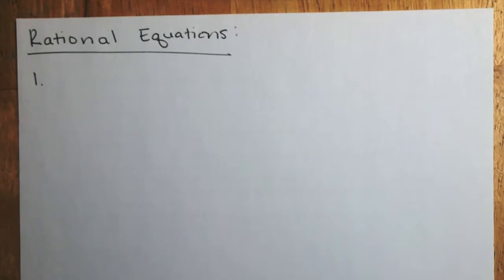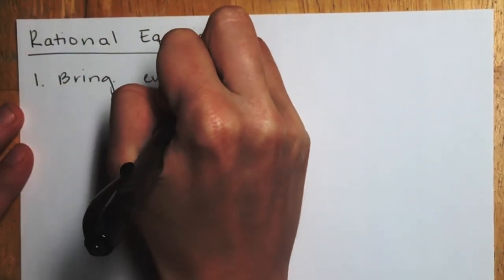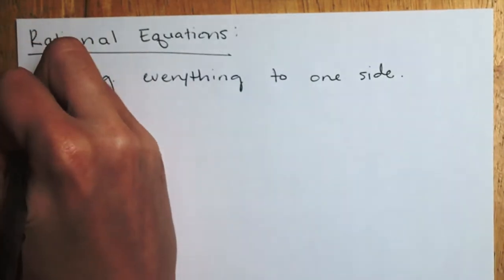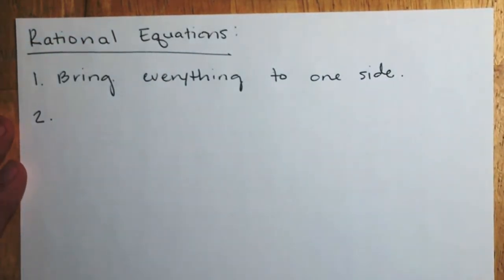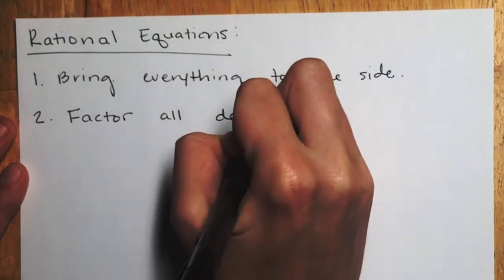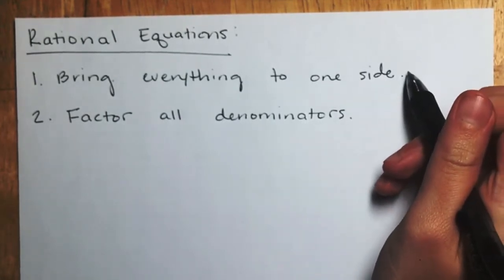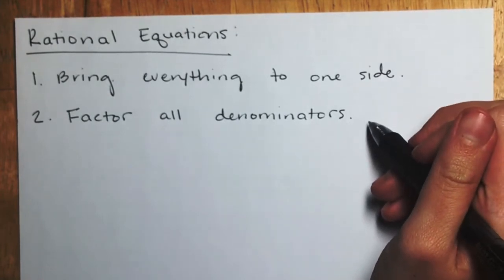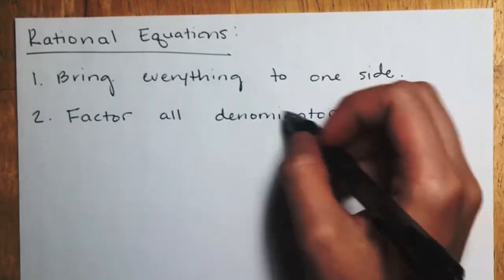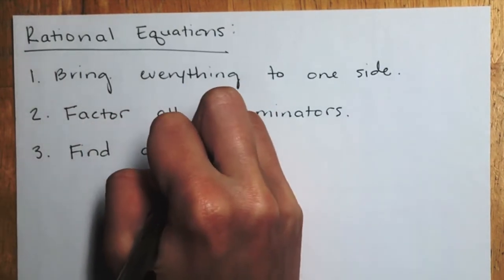Step one: we want to bring everything to one side of the equation. Step two: we want to factor all denominators. This already deviates from our steps from last time — for both we bring everything to one side, but before, our first step was to combine everything; here we don't want to combine, we just want to factor.